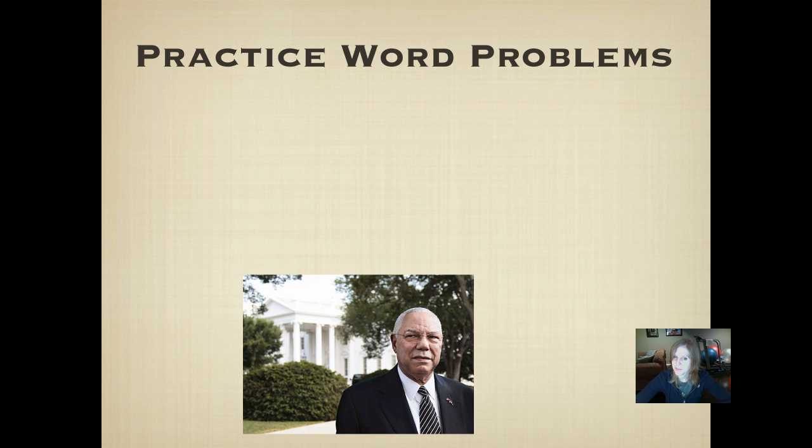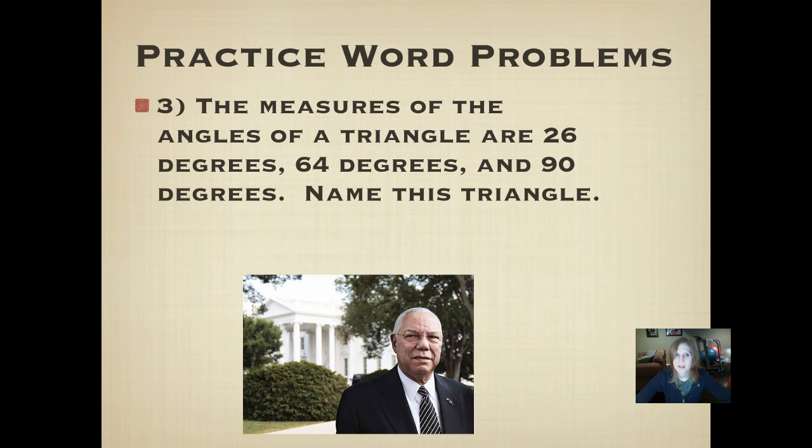Here's a practice word problem and a picture of Colin Powell in front of the White House. The measures of the angles of a triangle are 26 degrees, 64 degrees, and 90 degrees. Name this triangle using its angles. Now you could name it by its angles and its sides. We'll see if you can figure that part out, but at least give me the angles. Interestingly enough, I didn't give you a picture of this triangle, but I want you to think about the measure of the angles, those degrees, and that should help you a lot. Pause it and push play when you've figured it out.